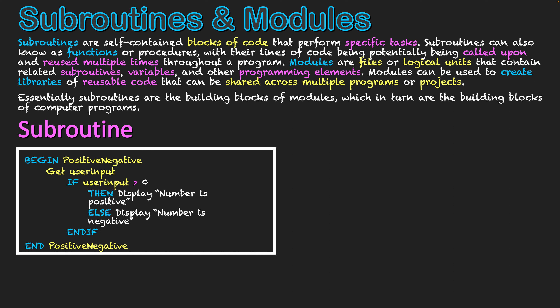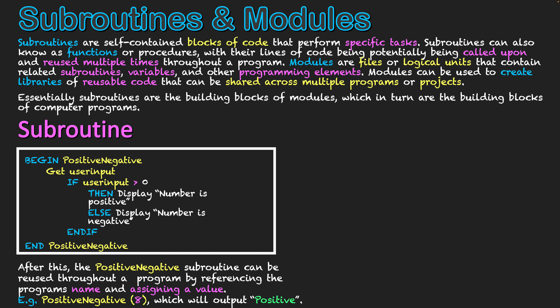I've created this program and named it positive negative. That means if I use this same code again, I don't need to write it all out again. I can just reference the name positive negative as the subroutine name. If I write positive negative and pass eight, it will still run that program and give me the answer, which should say positive. I could then use it again and write positive negative with minus one, and hopefully negative appears on screen. I don't have to rewrite the whole code — I can just reference the name of the subroutine multiple times, because I've already defined it once.